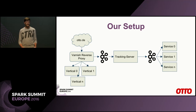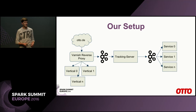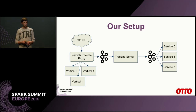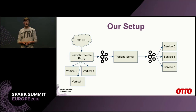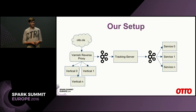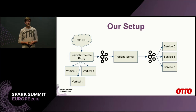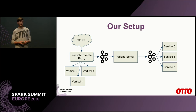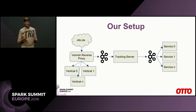When a customer visits our website, we have a Varnish reverse proxy which handles those requests and dispatches them to verticals. Our webshop is composed of verticals — many of them, each responsible for a certain business domain such as order, user, or product. When a vertical responds to a request from a user, it attaches certain tracking information to that response. Varnish takes that tracking information and sends it to a Kafka topic, from which our tracking server consumes, does its business logic and aggregations, and sends results to another Kafka topic for other downstream consumers.